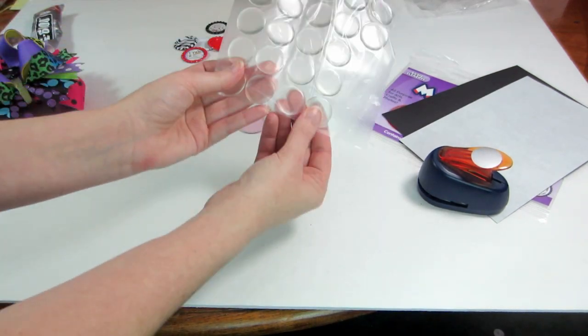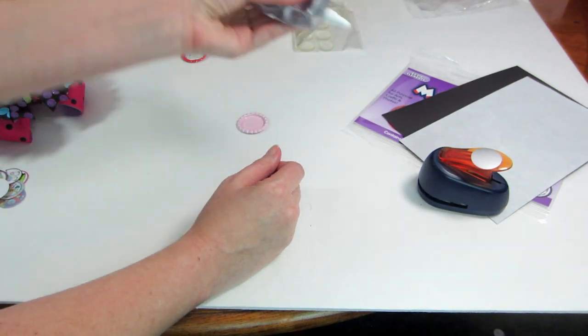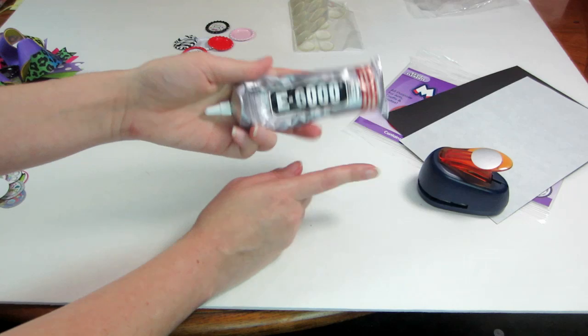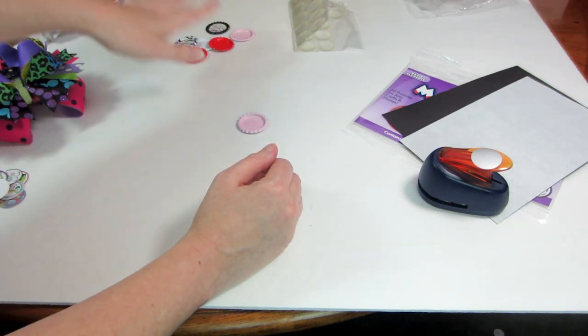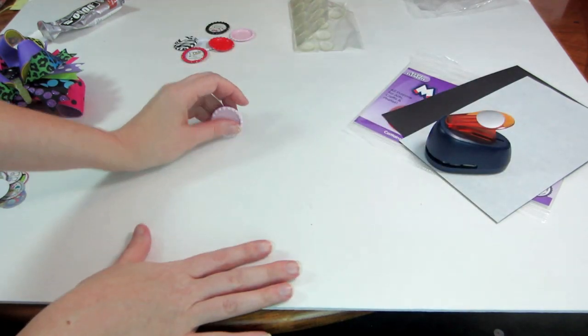And I'm using the clear epoxies to go on top. And your glue of choice. This is an E6000. You can use super glue or your hot glue. But anyways, that is the supplies that we're going to be working with.